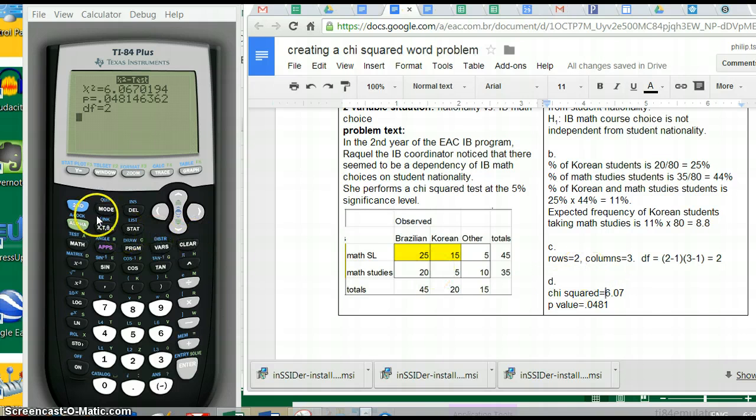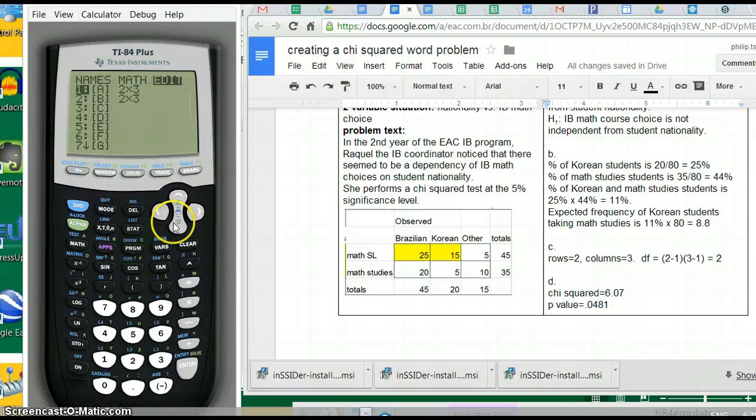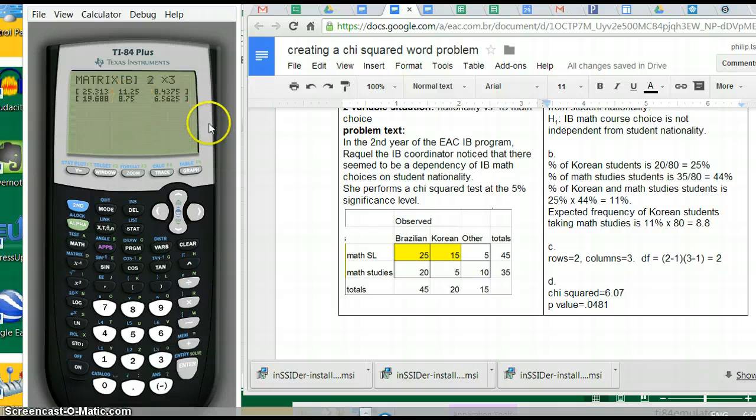If we want to look at the expected frequencies, we go to second matrix and look at B. Easiest way to look at it is to pretend you're going to edit it. This gives us the matrix. Remember how we showed that the number of Koreans taking math studies, the expected frequency would be 8.8? Well, there it is. It's 8.75.